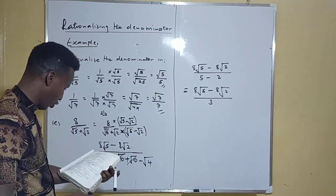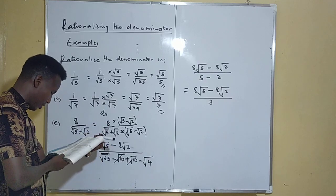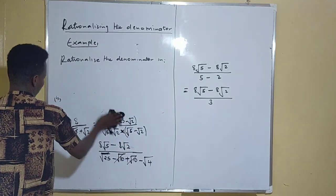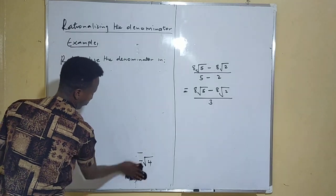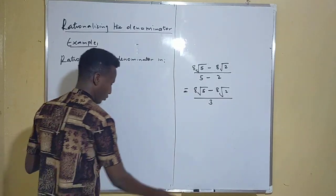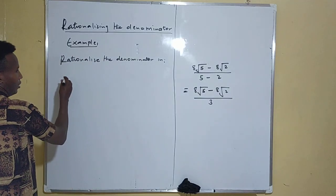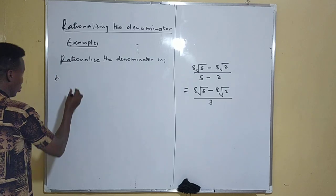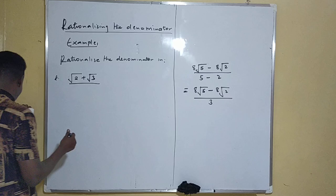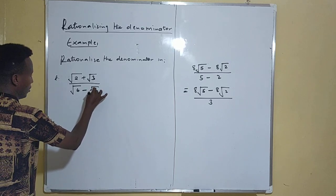When solving this kind of question, in the denominator side you must have two terms that will cancel each other. If those terms don't cancel, you are following the wrong procedure. That is the law for rationalizing the denominator. Let's see one more example: we have root 2 plus root 3 divided by root 6 minus root 3.